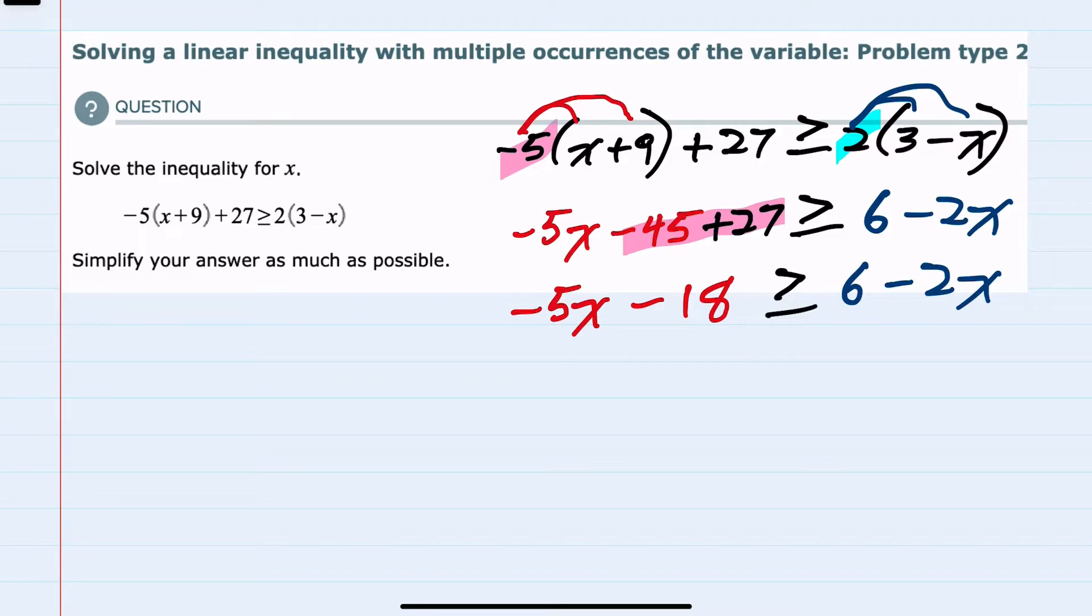I'm going to add 5x to both sides, which will cancel on the left and give me 6 plus 3x on the right. When I'm adding and subtracting from both sides of the inequality, no need to worry about the direction of the inequality. It will stay the same.